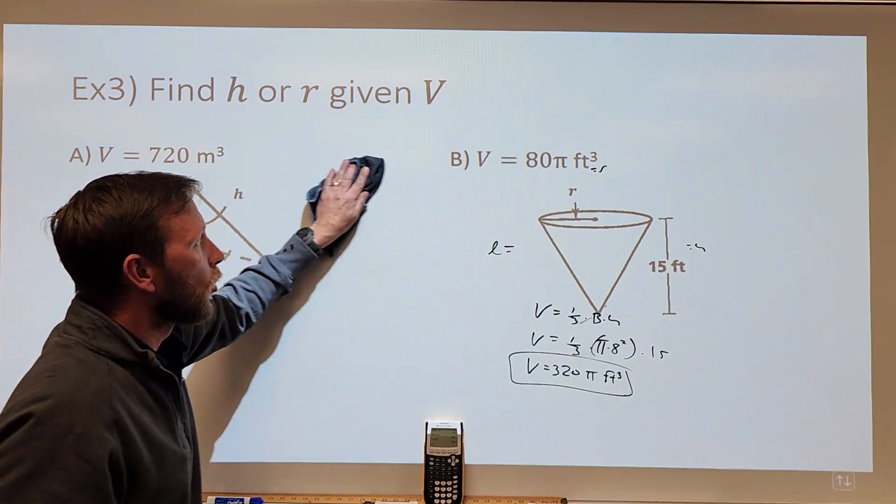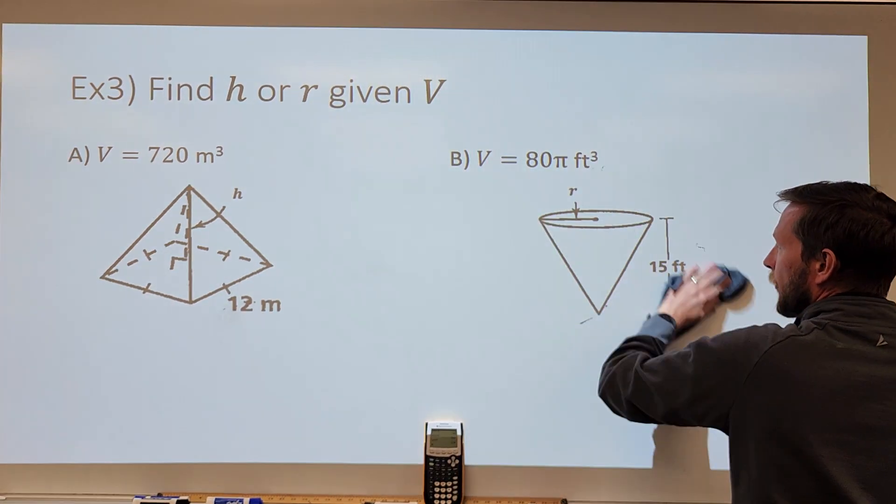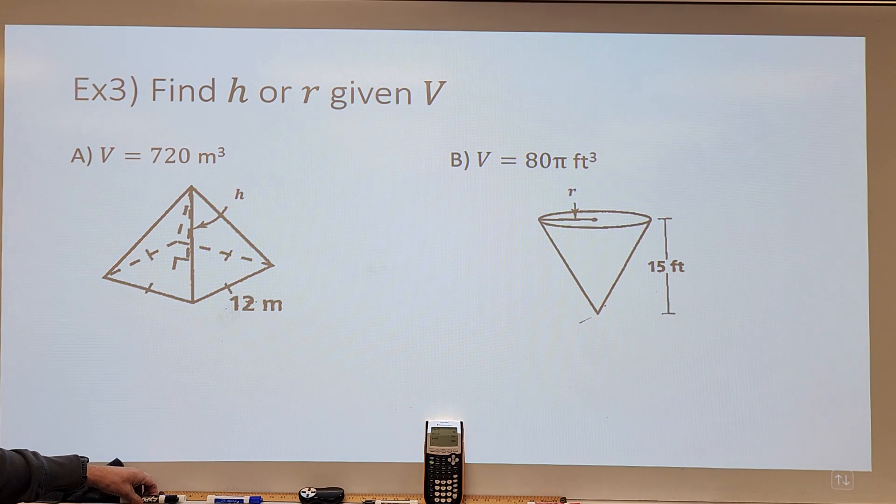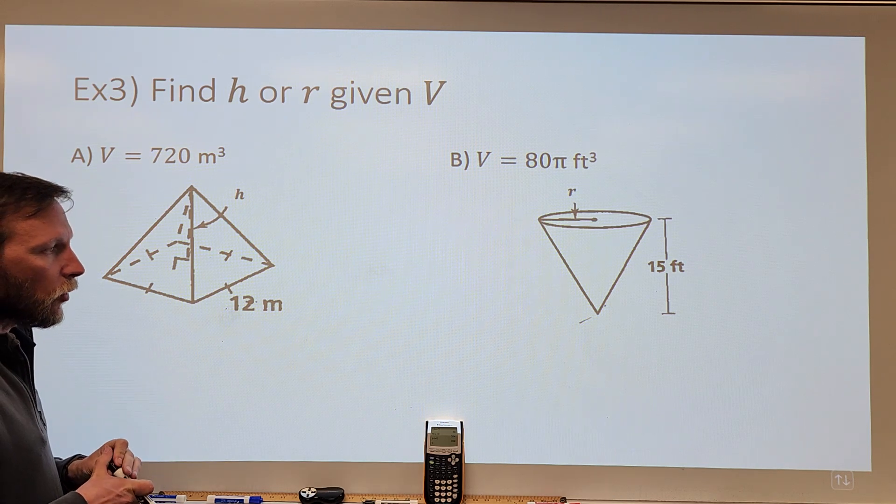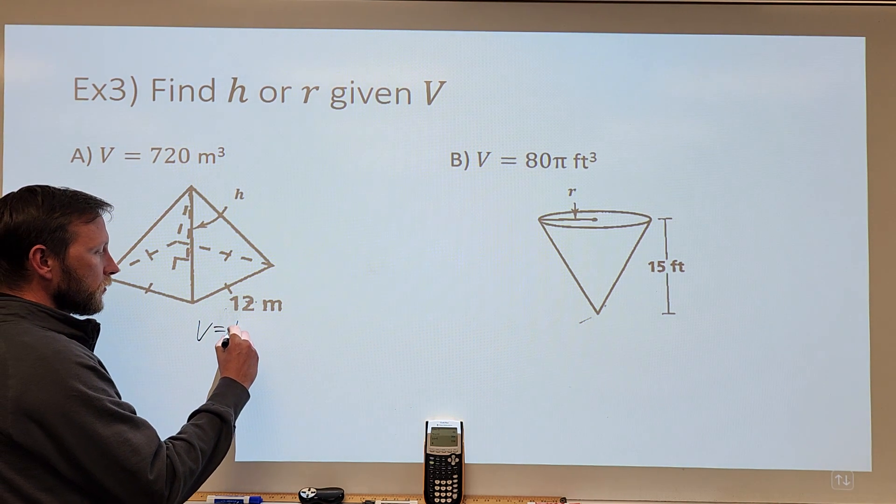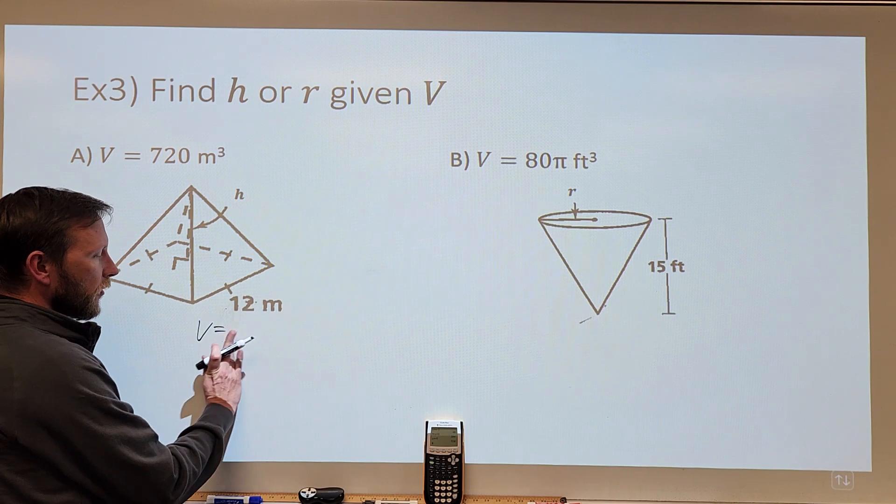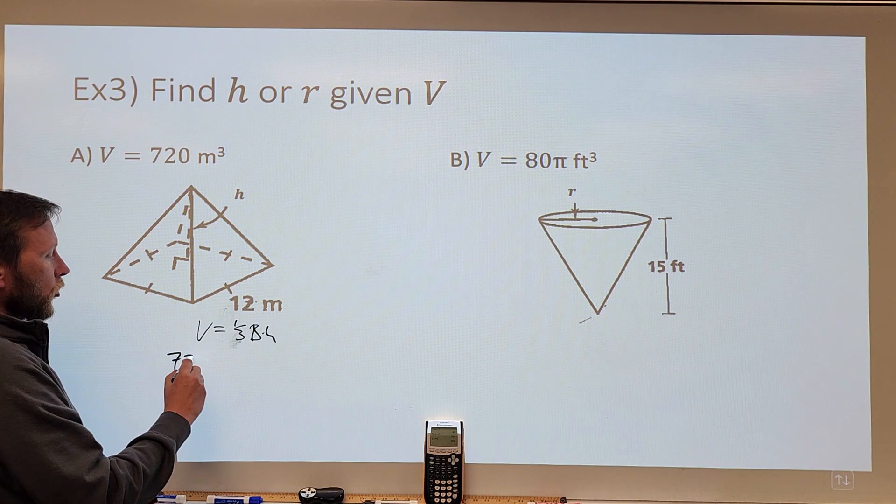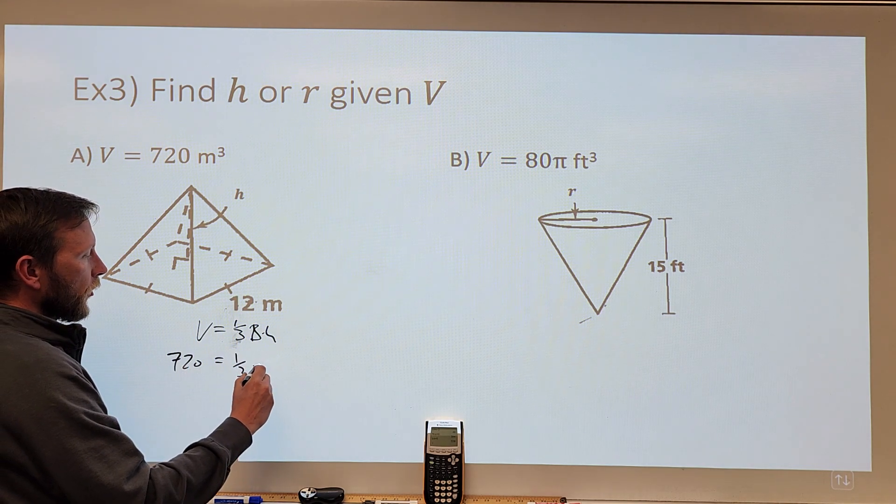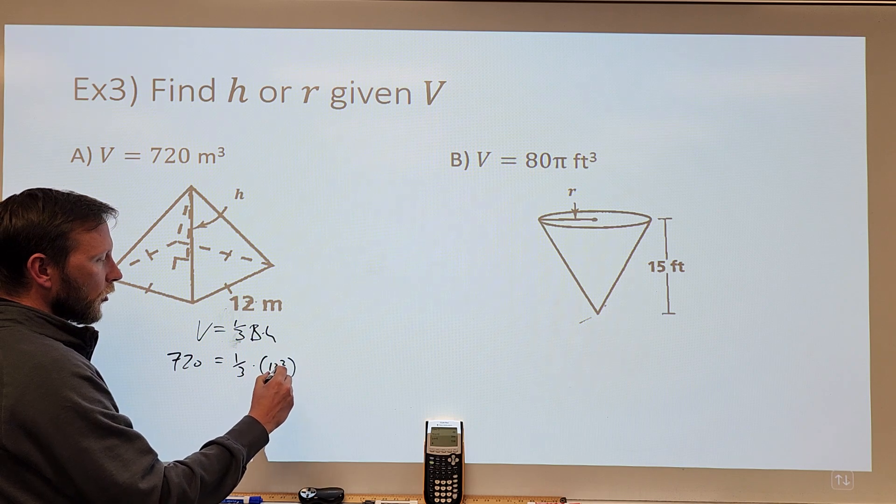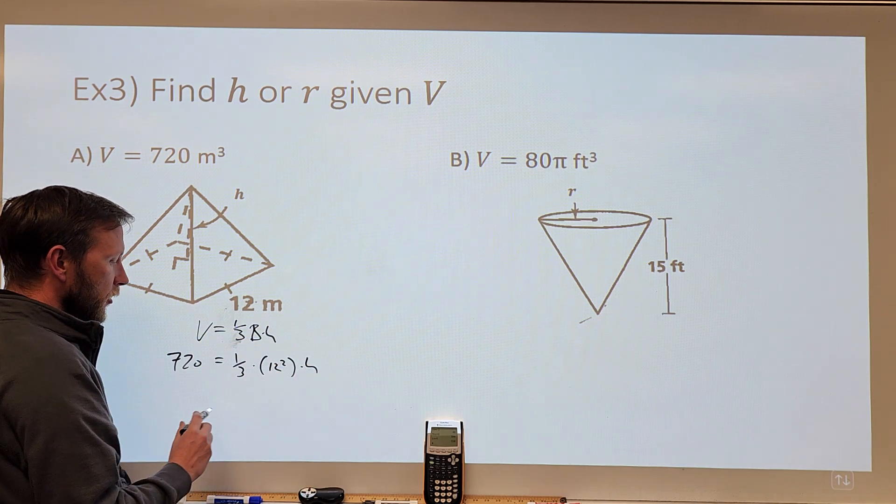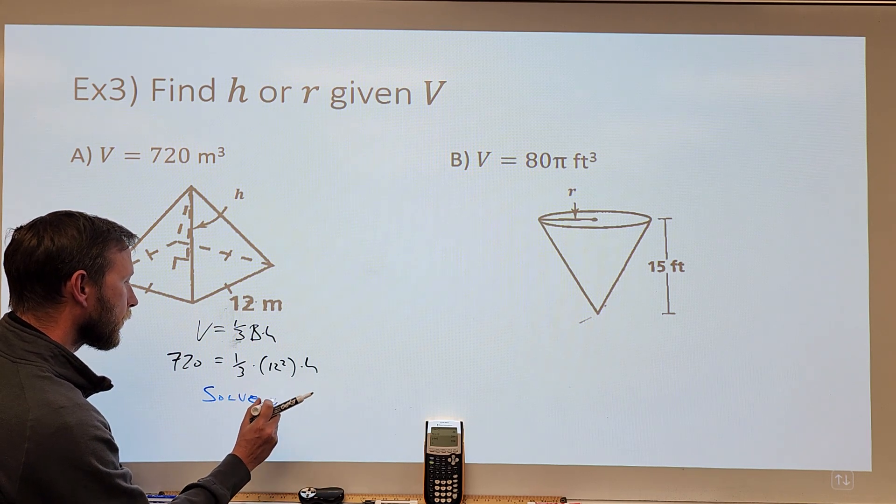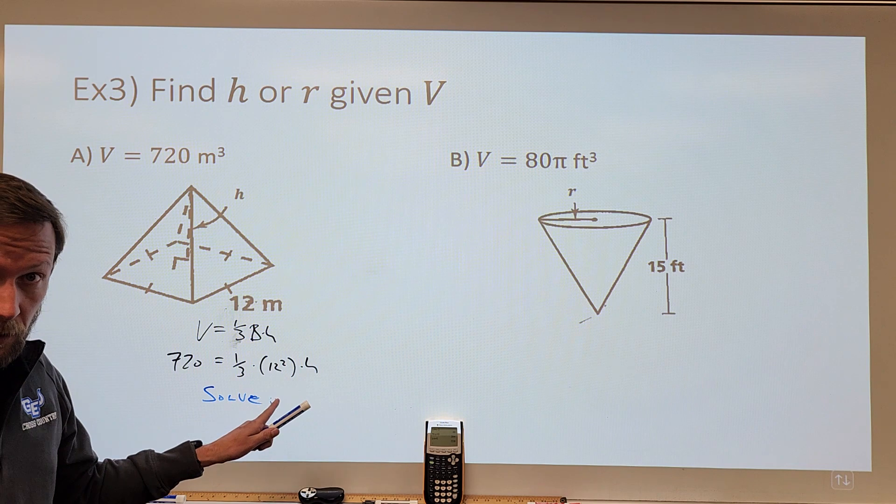Now, working this in reverse. This is basically the inverse operations here. We know what the volume is. Can we work it backwards to find the height? So with each of these, what we want to be able to do is write our equation where the volume is one-third times the area of the base times the height. We know the volume is 720, and that's going to equal one-third times the area of the base, which is going to be 12 squared or 144, times the height. I would like for you to solve this one.